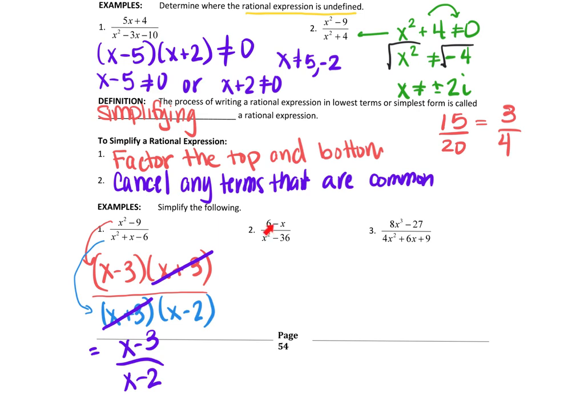If you look here, 6 minus x already factored. So the top here is just 6 minus x. The bottom factors into x minus 6, x plus 6.